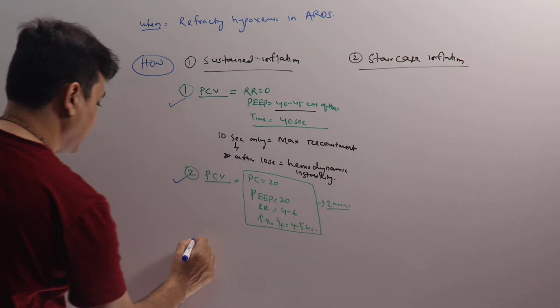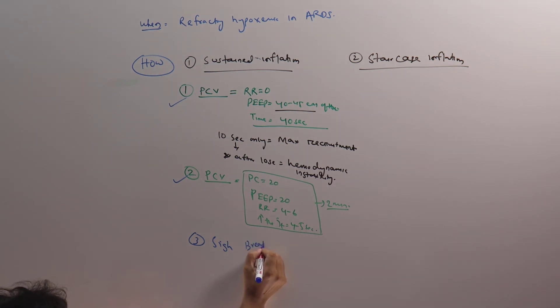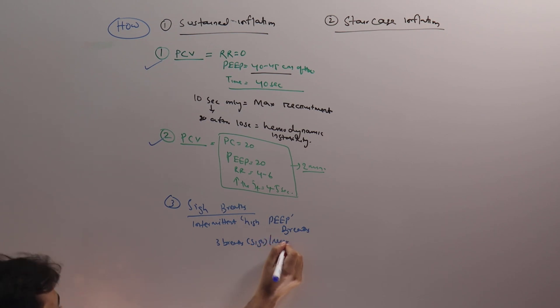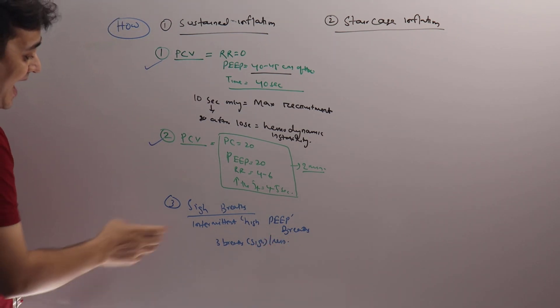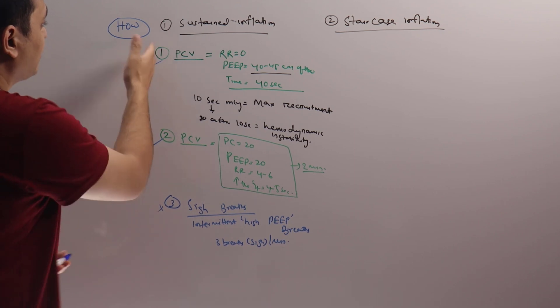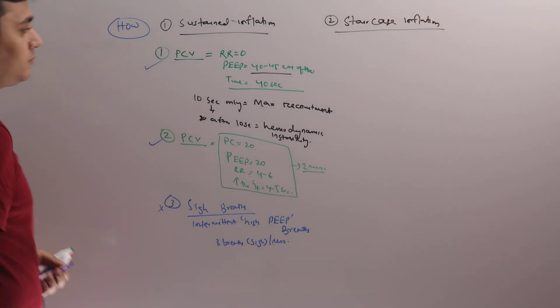The third method is providing sigh breaths. Sigh breaths are intermittent high PEEP breaths, usually 3 sigh breaths per minute. It can only be provided in a ventilator which has the facility. This is not practiced nowadays too much, but these two procedures are frequently performed. I personally love this method, the second method.